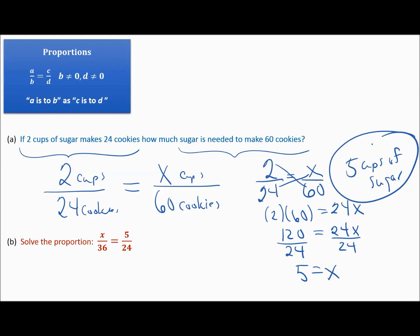So on part B, it simply just says to solve the proportion. The hard part, setting up the proportion, is done. I need to cross multiply, so I have 24x is equal to 5 times 36. Now I just need to do the calculation. So 5 times 36 gives me 180 on the right side. Then divide by 24. So I get x equals 180 divided by 24 gives me 7.5. So you will not always have a nice whole number.